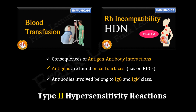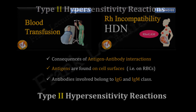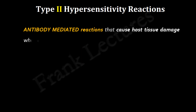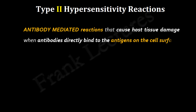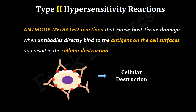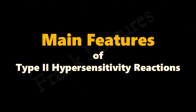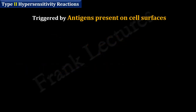Blood transfusion reactions and RH incompatibility disease are examples of type 2 hypersensitivity reactions. Type 2 hypersensitivity reactions are antibody-mediated reactions that cause host tissue damage when antibodies directly bind to antigens on cell surfaces, resulting in cellular destruction.